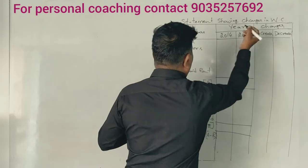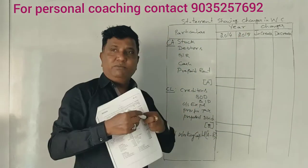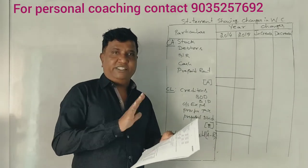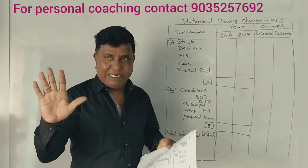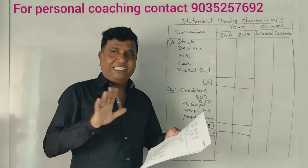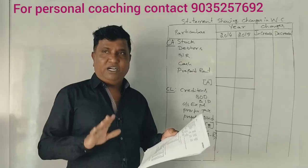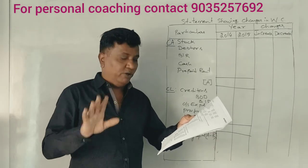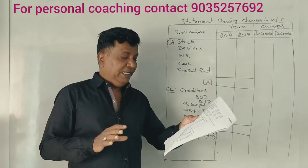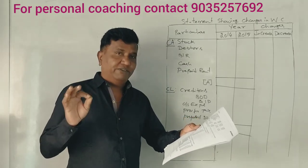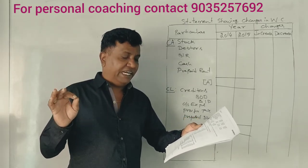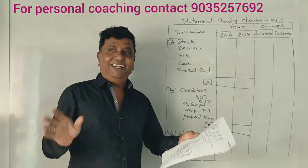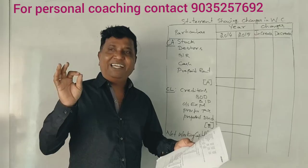Now, looking at the balance sheet items — we have current assets, current liabilities, and adjustments. First, the adjustment: consider proposed dividend and provision for taxation as non-current liability.